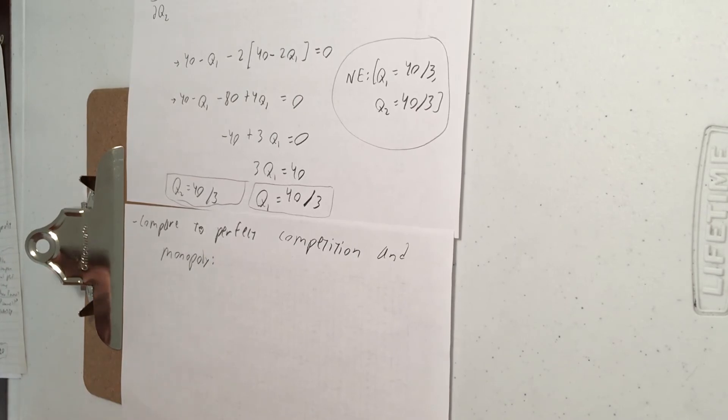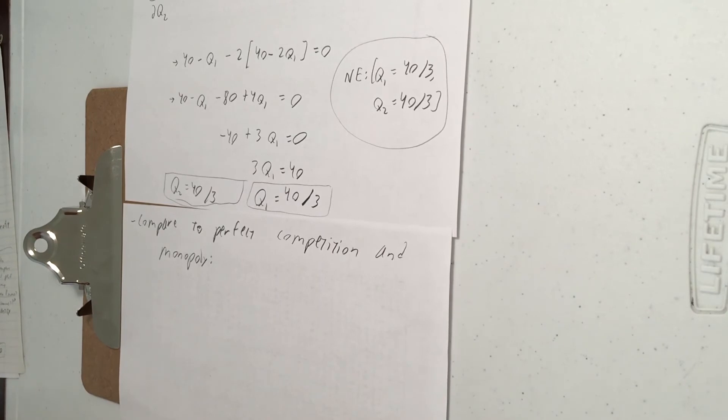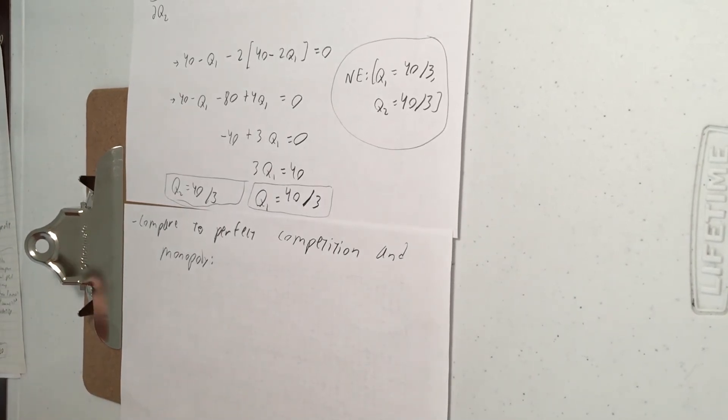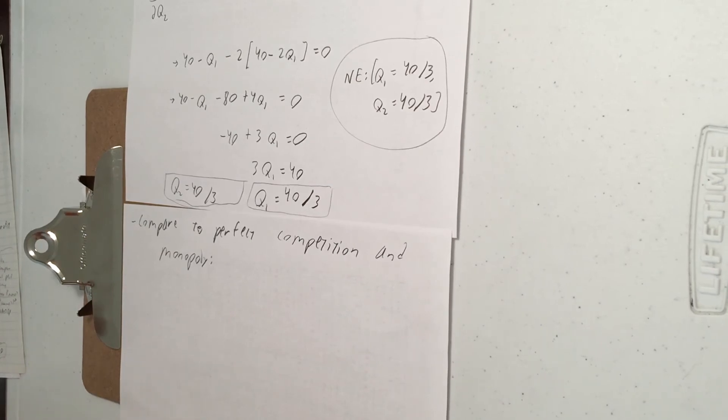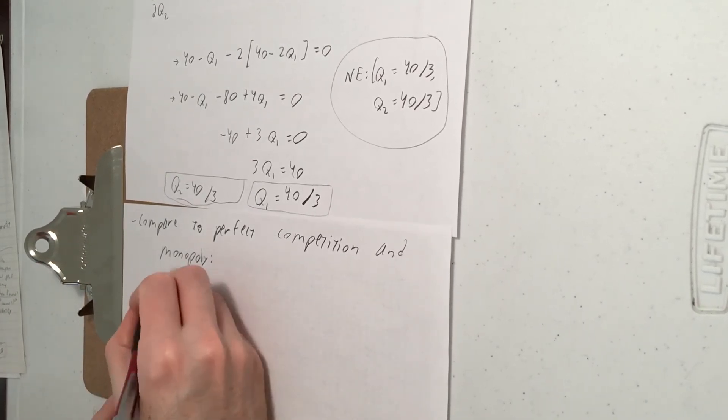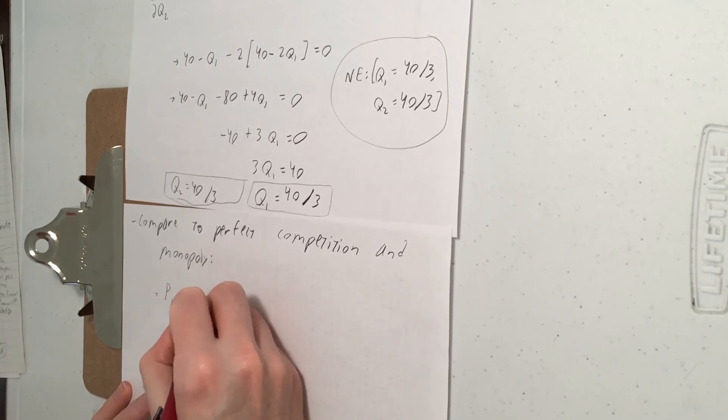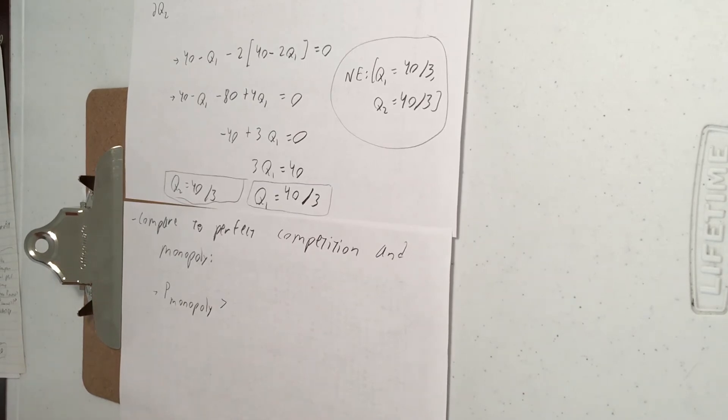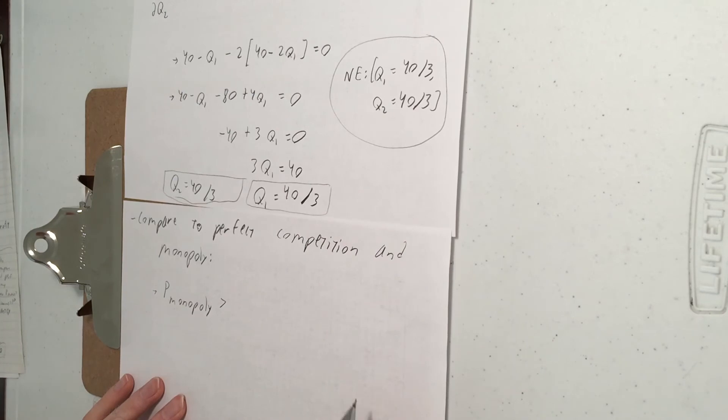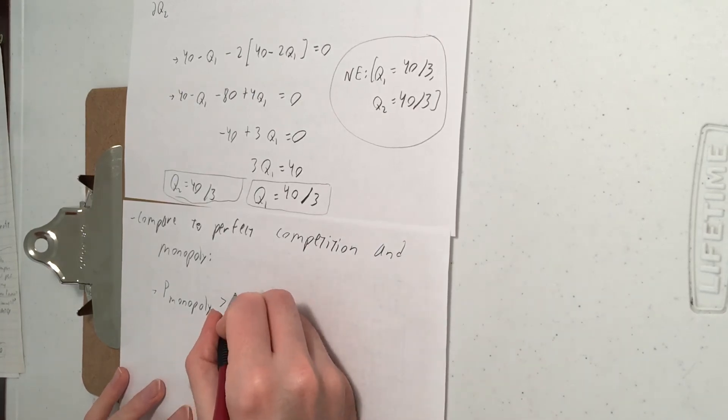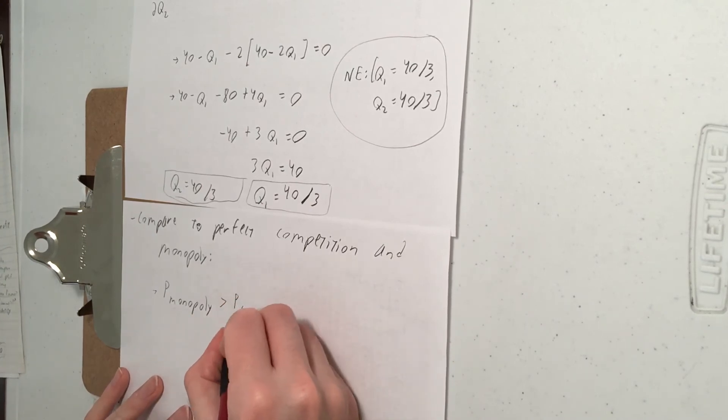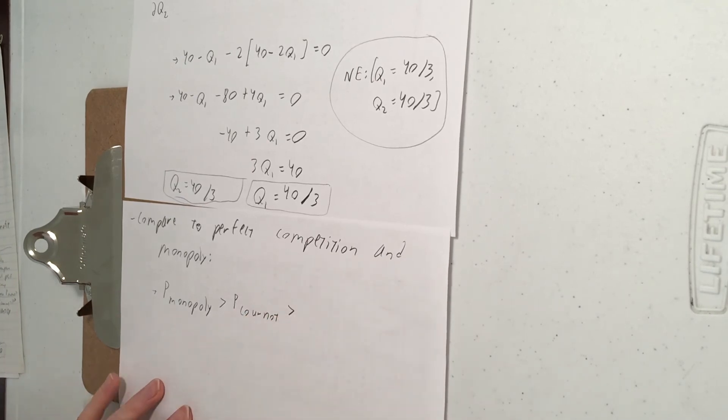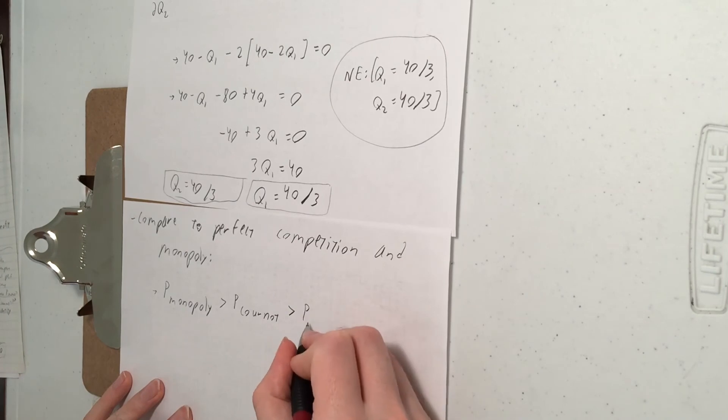So let's talk about price first. So where is price going to be highest? In the Cournot model? In perfect competition? Or in monopoly? Go ahead and pause the video here and think about that. When you're ready, press play. So the monopoly price should be the biggest. So when there's no competition, the firm can just raise the price more. Prices will be lowest when there is the most competition. Competition drives prices down. So we expect the monopoly price to be bigger than the Cournot price. We also expect the Cournot price to be higher than the perfect competition price.